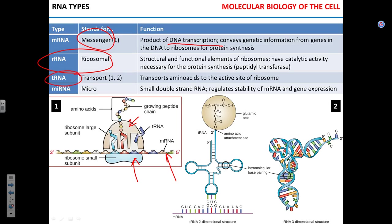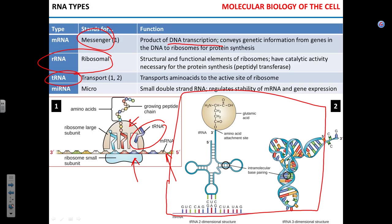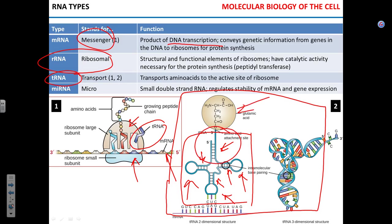tRNA stands for transport. You can see the schematic illustration of transfer RNA here. tRNA is often said to have a cloverleaf structure. It has four stems and three loops. One stem carries the amino acid, and the anticodon loop determines in which place in the protein this amino acid will get inserted.